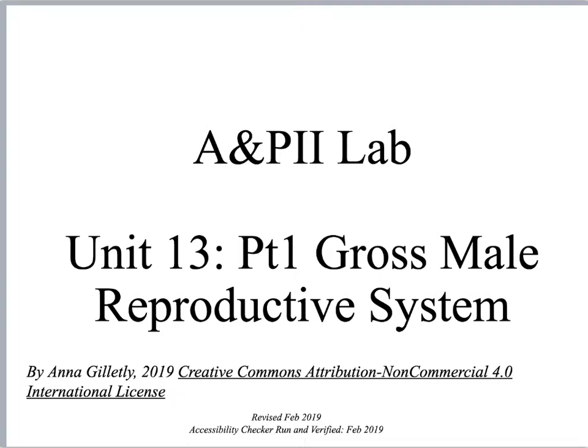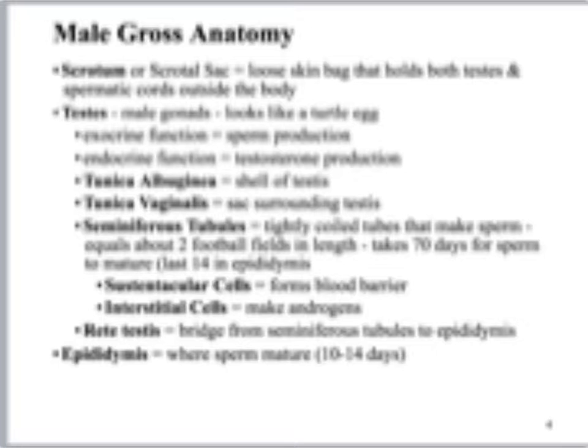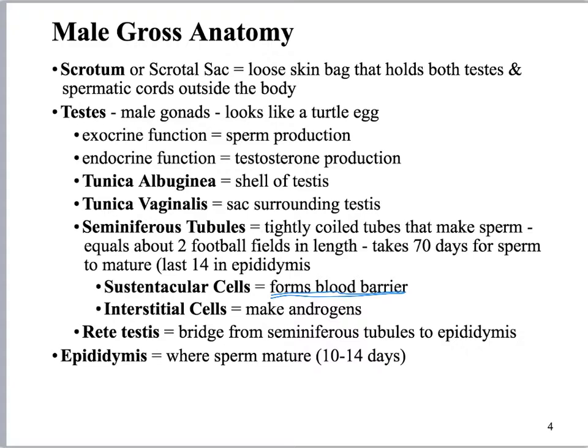Welcome, this is Anna and we're going to be starting unit 3 on the male reproductive system. This particular video is going to be going over the gross anatomy. The next few slides are obligatory note slides — don't ignore them because they tell you what things do. The Sertoli cells form the blood-testis barrier; the interstitial cells make testosterone. You need to know not only identification but also function.